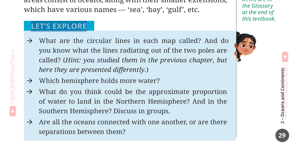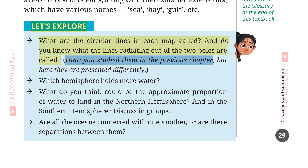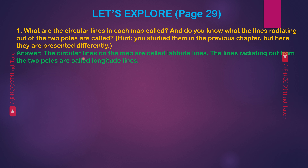Let's Explore, Page 29. Question 1: What are the circular lines in each map called? And do you know what the lines radiating out of the two poles are called? Hint: you studied them in the previous chapter, but here they are presented differently. Answer: the circular lines on the map are called latitude lines. The lines radiating out from the two poles are called longitude lines.